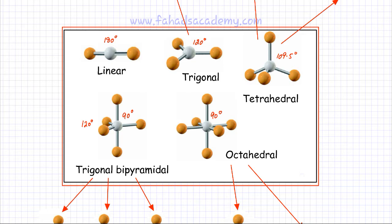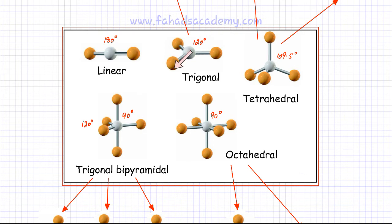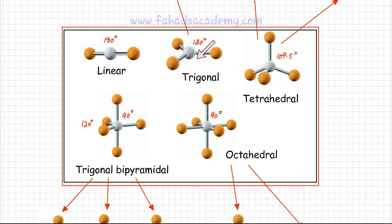The second shape is trigonal planar. If you have three bonding pairs of electrons, you have three bonds. They would be arranged in a fan-shaped manner and it's going to be a flat, planar molecule. All the angles between the bonds are going to be 120 degrees.